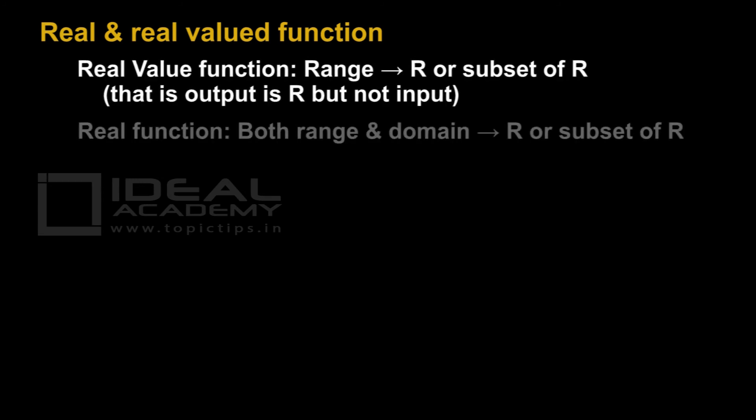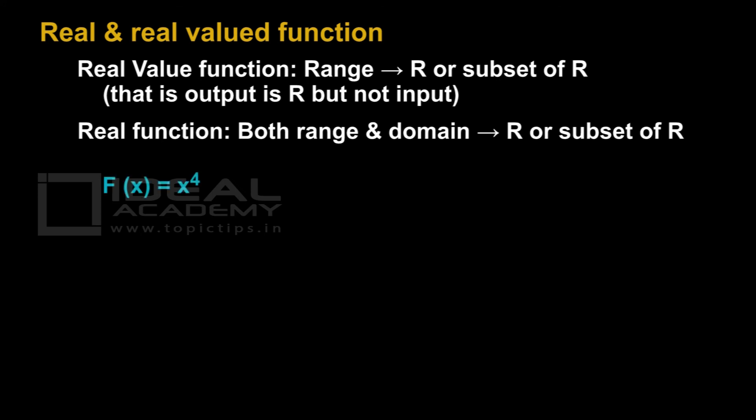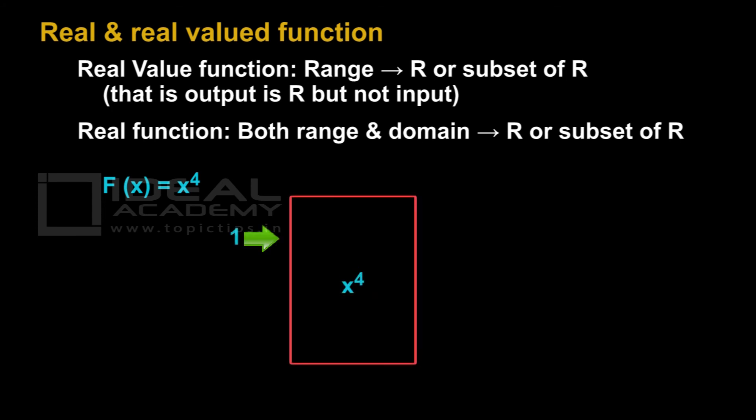Now let's discuss real and real valued functions. In a real function, both input and output are real numbers — that is, both the domain and range are real. In a real valued function, the output is a real number but the input may not be real — that is, the range is real but the domain may not be real. For example, for f(x) = x⁴, giving input 1 gives output 1, and input 2 gives output 16. Since both inputs and outputs are real numbers, this function is a real function.